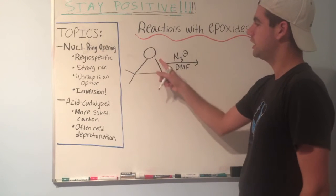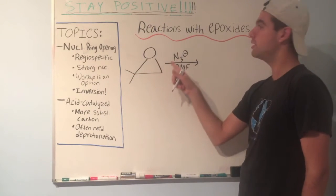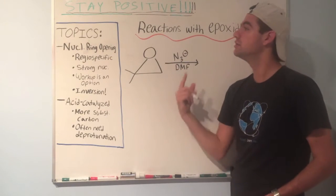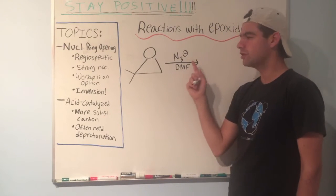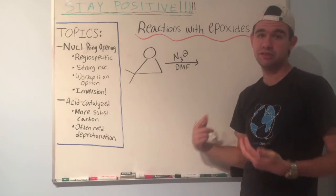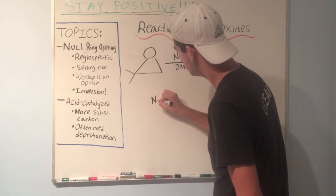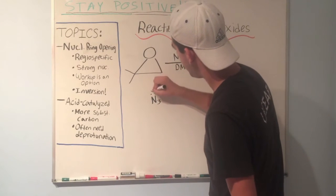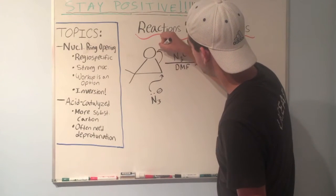Let's take a look at an example of nucleophilic ring opening. We have an epoxide here with two methyl groups, and we're going to react this epoxide with azide (N3-), which is a strong nucleophile — that's why this is called nucleophilic ring opening. Here's what the mechanism looks like: the N3- is going to attack the carbon here, which will open the epoxide ring.